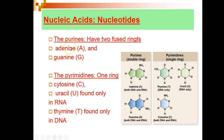The nitrogenous base of nucleotides can be of two forms: purines or pyrimidines. Purines consist of two rings of carbons and nitrogens. There are two types of purines found in nucleic acids: adenine and guanine. Pyrimidines consist of one ring of nitrogens and carbons. There are three forms of pyrimidines: thymine, which is unique to DNA; uracil, which is unique to RNA; and cytosine, found in both DNA and RNA.